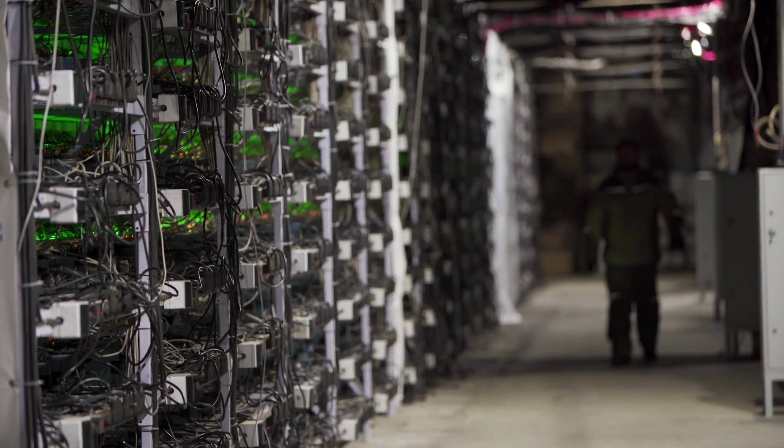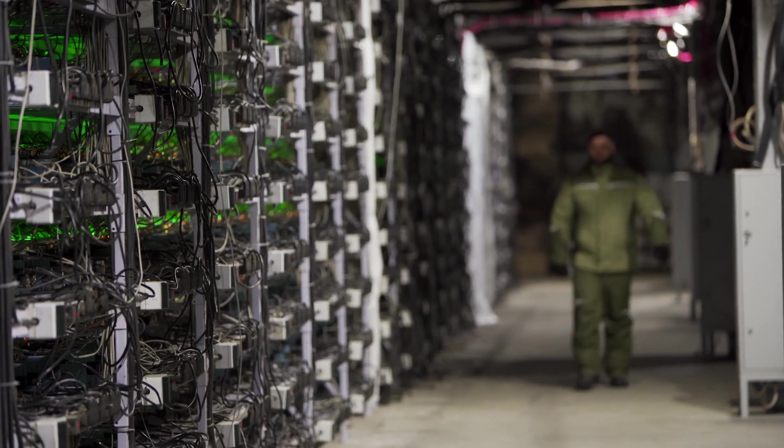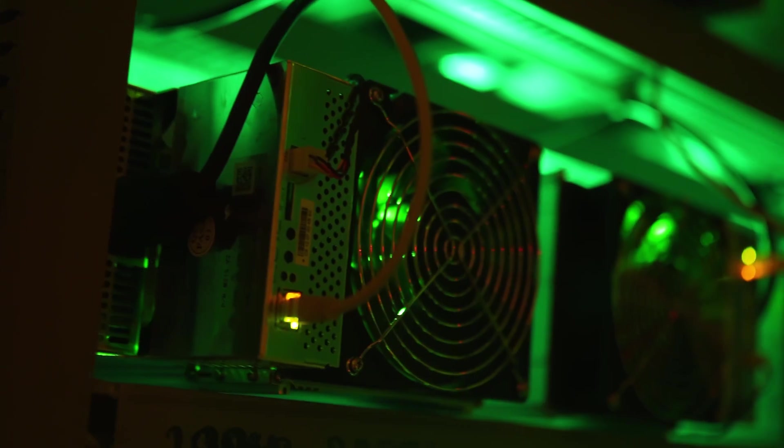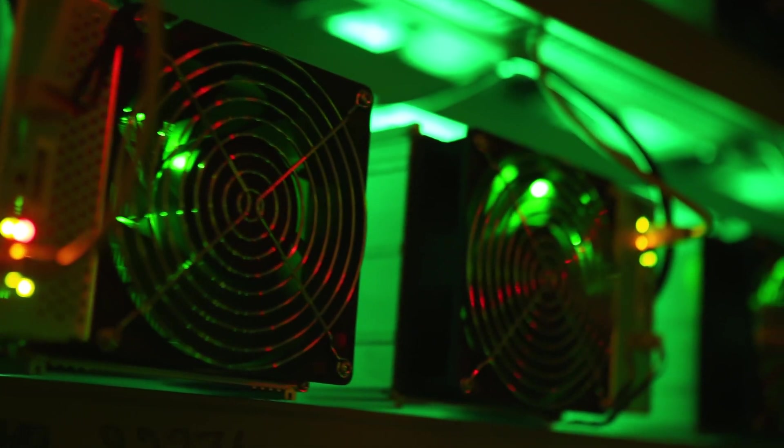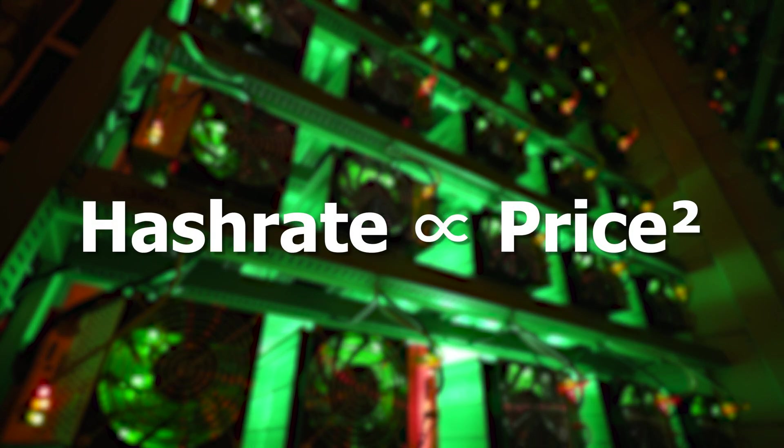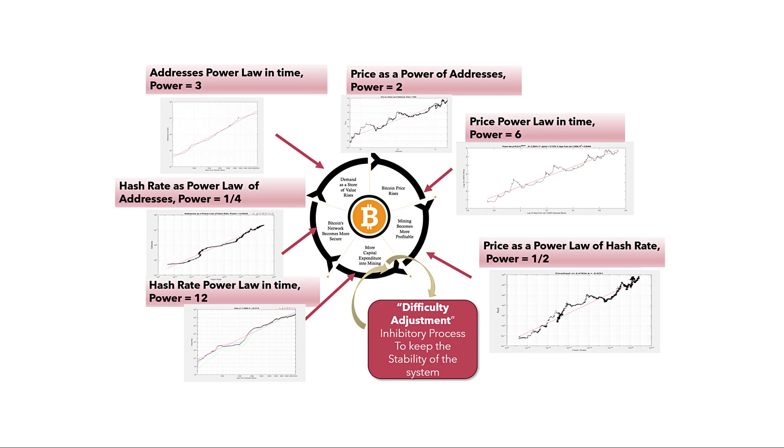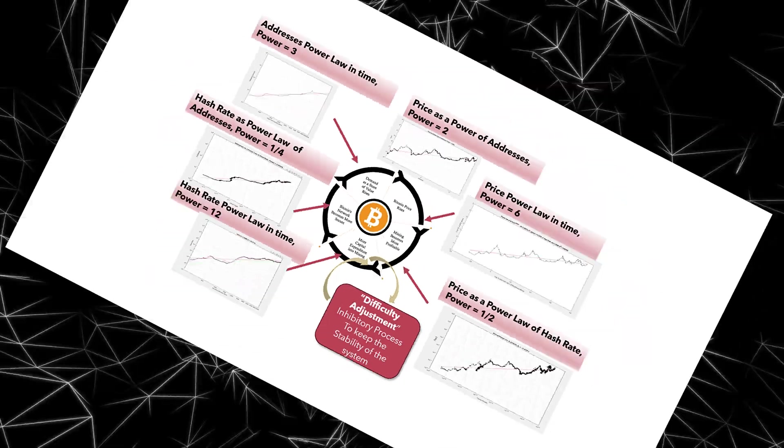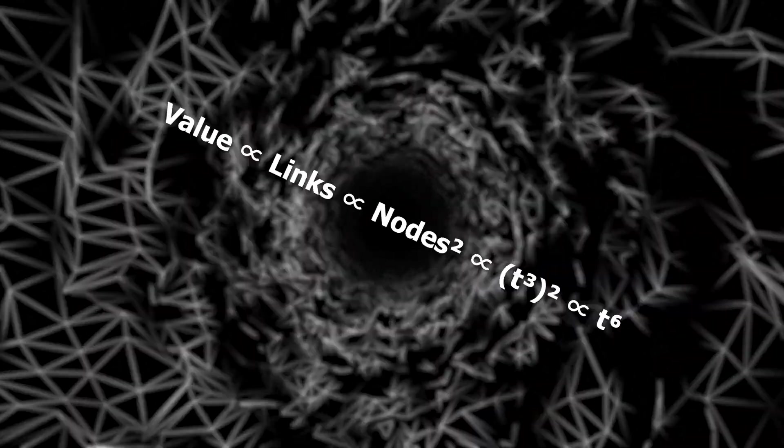Alongside the growth of Bitcoiners, the mining machines that secure the network also scale up. This is because the hash rate grows according to the power law, following a relationship with the price of Bitcoin. This is expressed as the hash rate is proportional to the square of the price. All these growth patterns, Bitcoin adoption, network links, and hash rates are connected through power laws that reinforce each other in iterative loops. The entire system scales proportionally, exhibiting scale invariance.